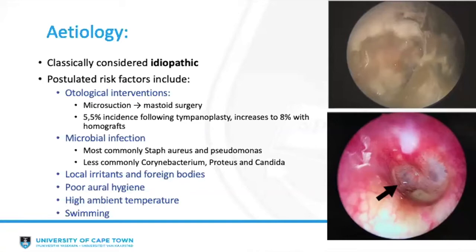Bacterial and fungal infections have also been implicated in many reports. However, their exact role as primary pathogens versus secondary commensals is unknown. The most common bacterial isolates include both methicillin-sensitive and resistant Staph aureus, Pseudomonas, and less commonly Corynebacterium, Proteus, and fungal species like Candida.